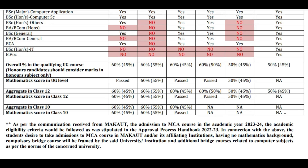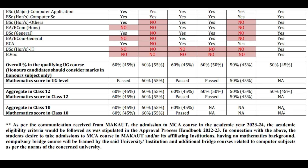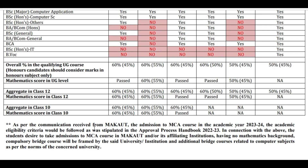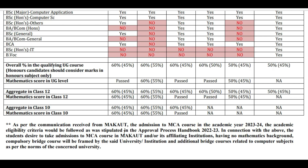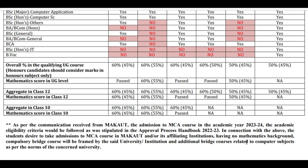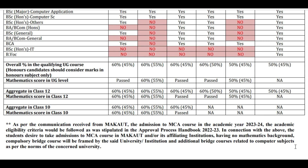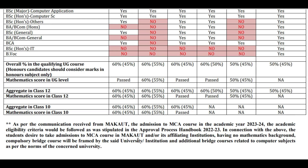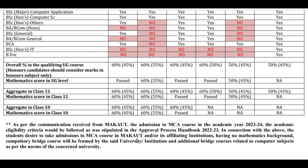The academic eligibility criteria would be followed as stipulated in the Approval Process Handbook 2020-23. Students desiring to take admissions to MCA course in Macau or its affiliating institution, having no mathematics background, must complete a compulsory bridge course framed by the university, along with additional bridge courses related to computer subjects as per the norms of the concerned university. The University of Calcutta is eligible.